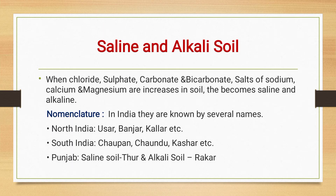In the case of saline and alkali soil, when chloride, sulfate, carbonate, and bicarbonate salts of sodium, calcium, and magnesium are increased in the soil, they become saline and alkaline. In terms of nomenclature in India, they are known by several names. In North India they are called saline soil, also called usar, banjar, and khalar.